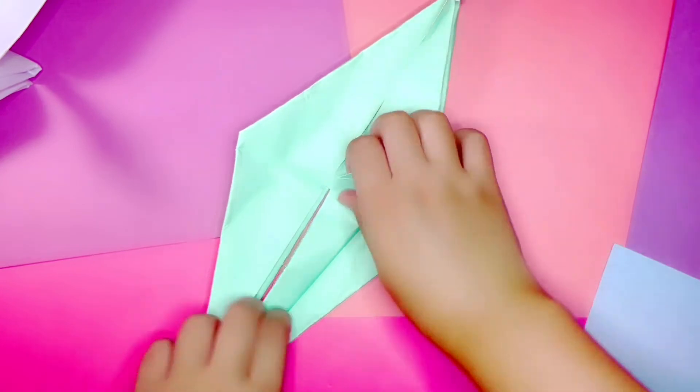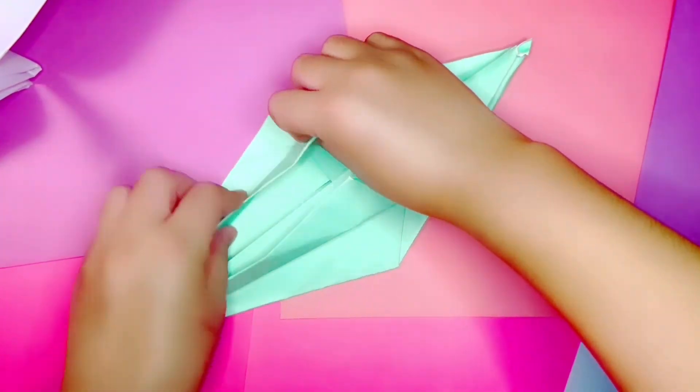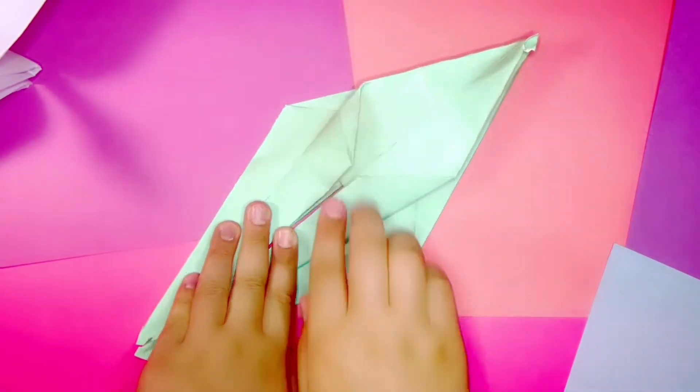Next fold the right top corner of the diamond to meet the center line. Repeat this for the left top corner and both sides.